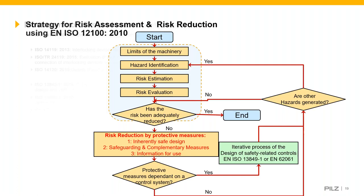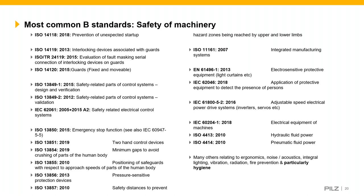Here are some of the most commonly used B-type standards, not in any particular order. Popular ones include EN 14119 and the technical report TR 24119, which cover requirements for interlock devices and the very popular topic of fault masking, which we'll touch on briefly later in the webinar.